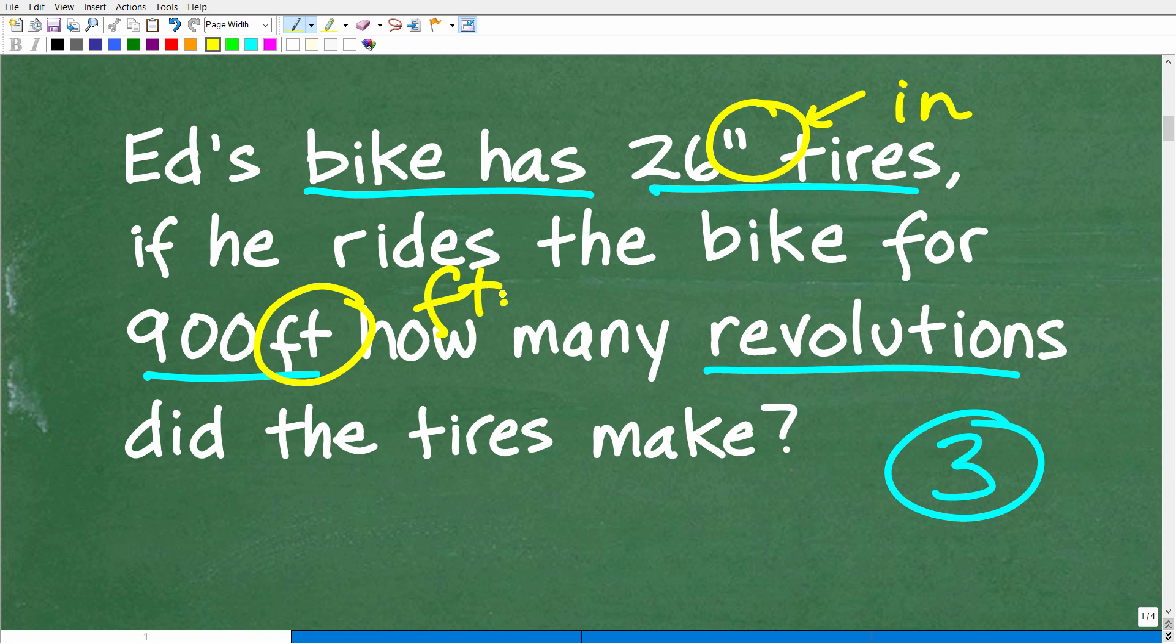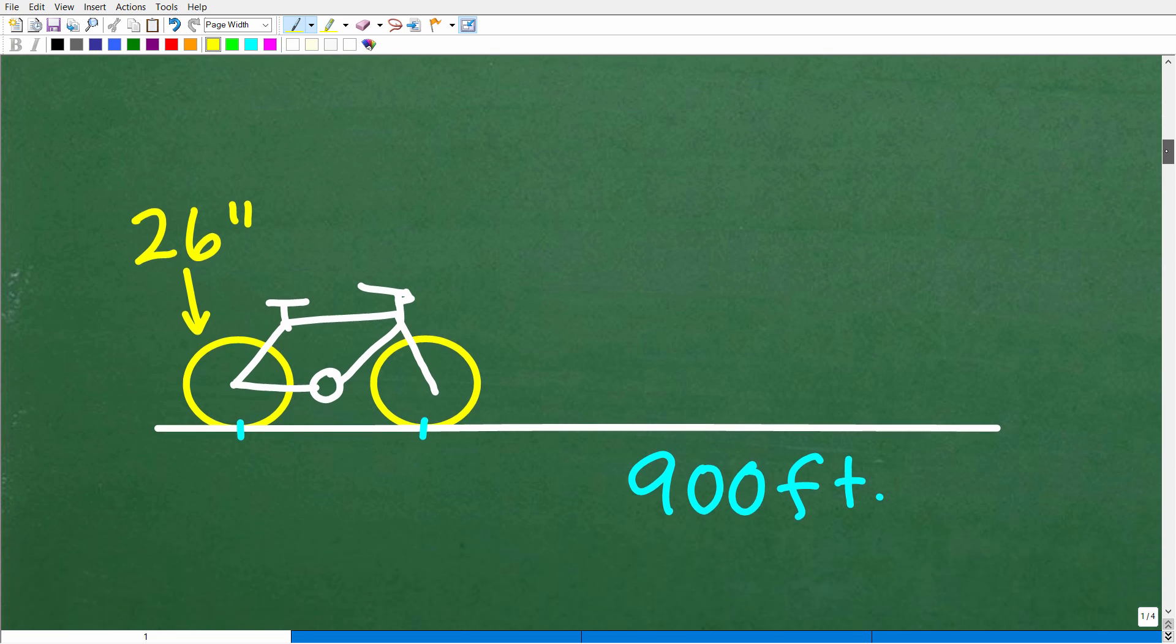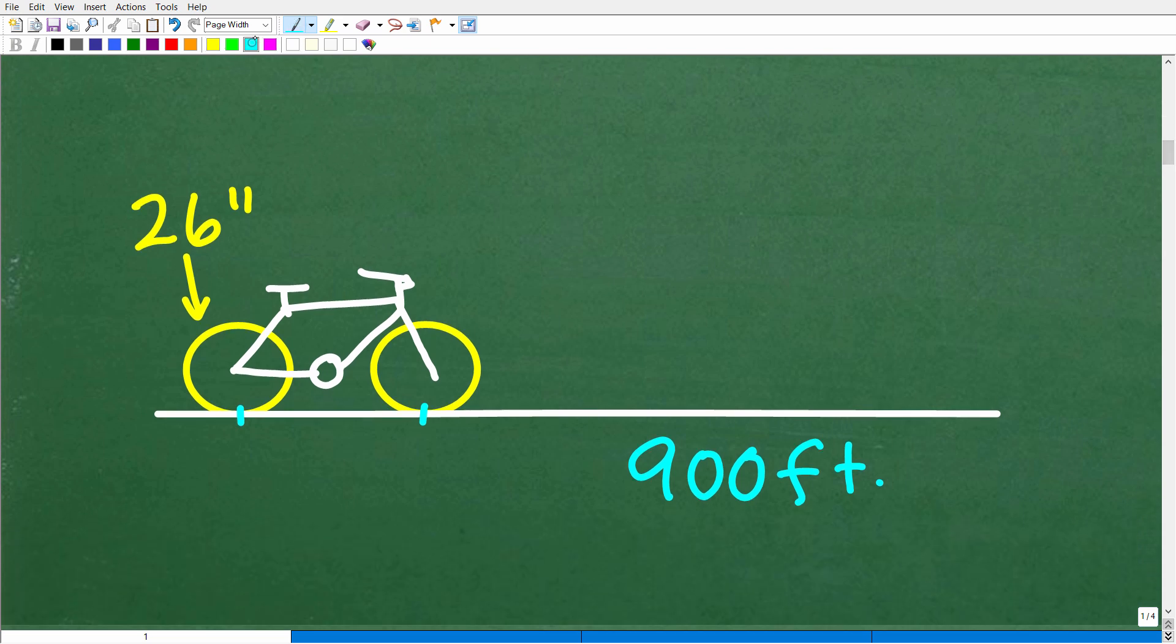But the first thing you want to do in any math word problem is to model the situation. Let's take a look at my sketch. So here is Ed's bike. Its tires are 26 inches. In other words, that's the width of the tires. We're going to assume that both tires are 26 inches. And the width is another way to describe the diameter of a circle. We have to assume these tires are perfectly round as well.